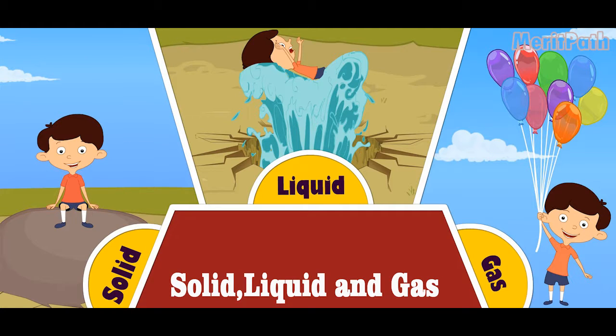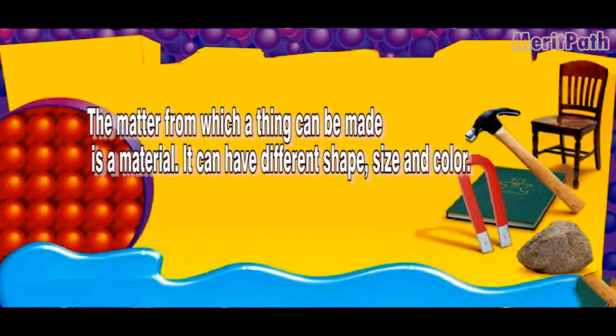Solid, liquid and gas. The matter from which a thing can be made is a material. It can have different shape, size and color.